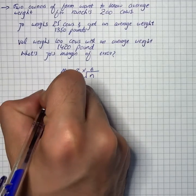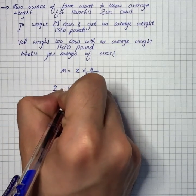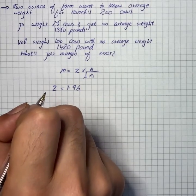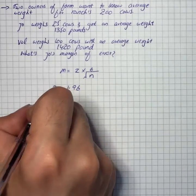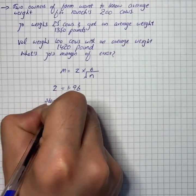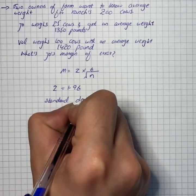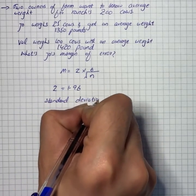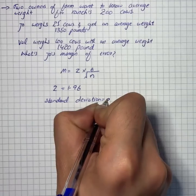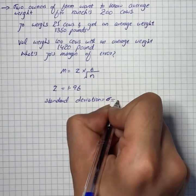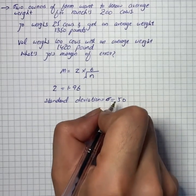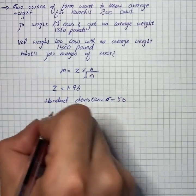So we have z equals 1.96 for a 95% confidence interval. The standard deviation equals 50. Now we're going to put in the values.